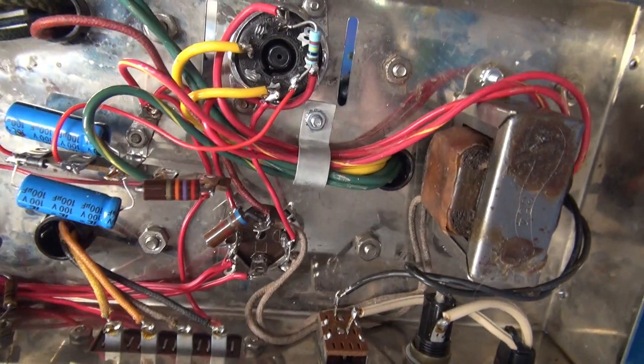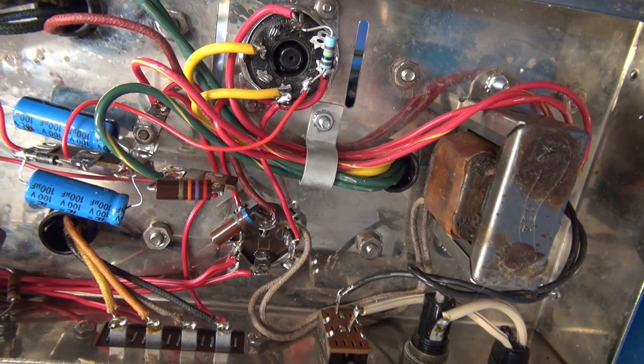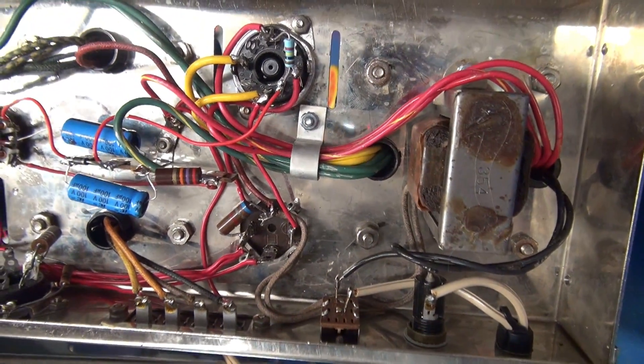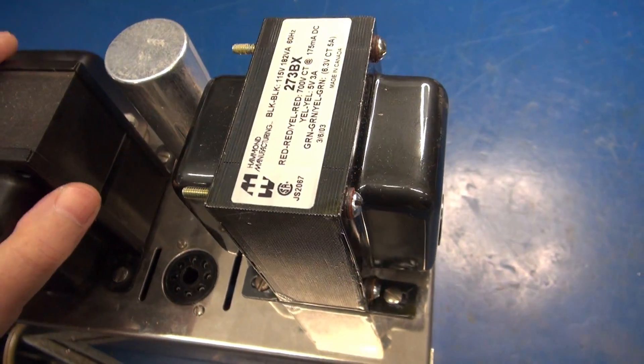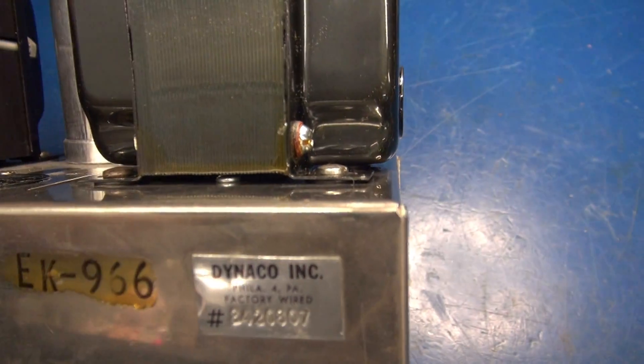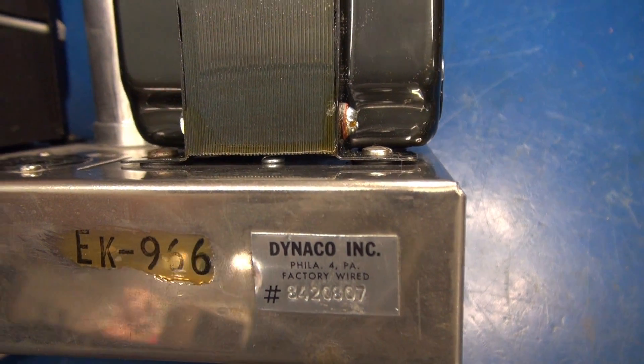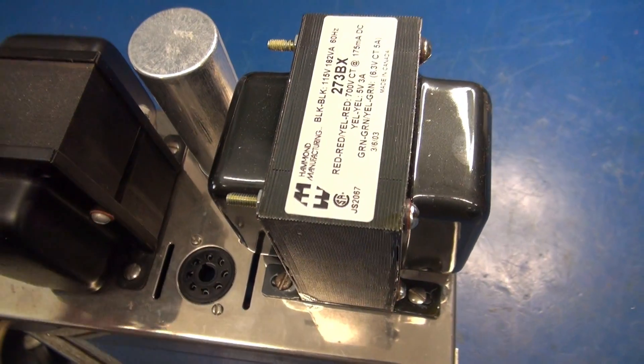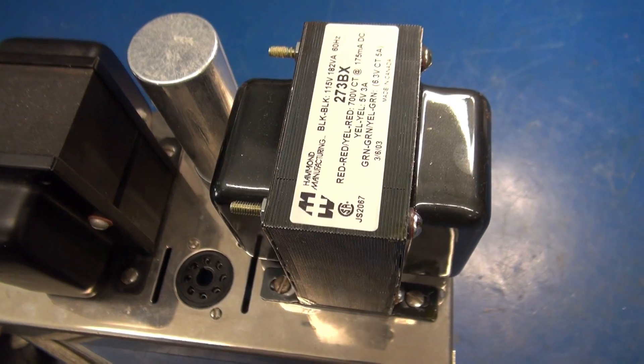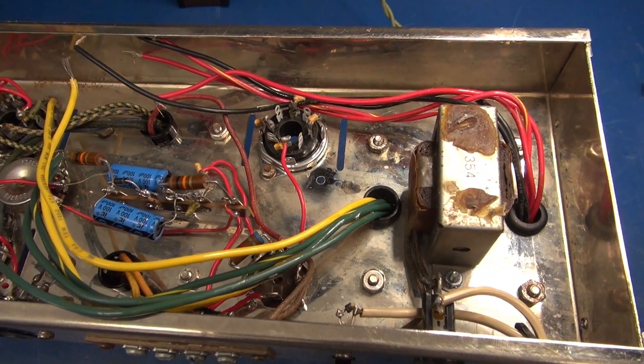So I decided to mount the choke using its own hardware rather than sharing the mounting hardware of the power transformer. There is the Hammond transformer mounted in the place of the original. There is a gap underneath to clear the choke screws so you don't have to worry about that interfering with mounting of the transformer. Next step let's get her wired up.